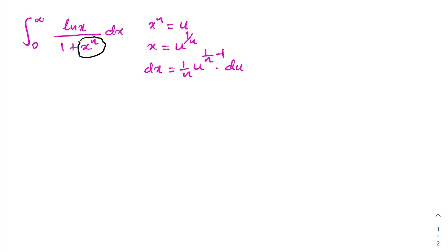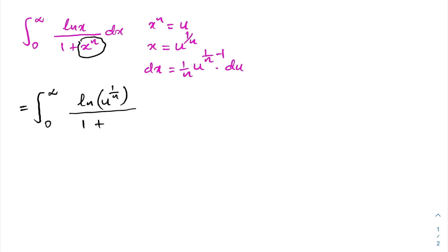Now we substitute into our integral. The lower limit: when x approaches 0, u also approaches 0. Upper limit: when x approaches infinity, u also approaches infinity. The natural log of x becomes log of u to the 1 over n, the denominator 1 plus x to the n becomes 1 plus u, and dx becomes 1 over n times u to the 1 over n minus 1, du.